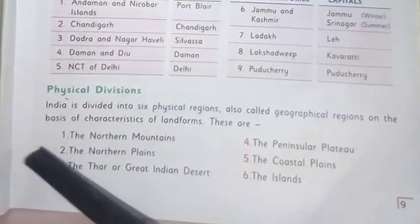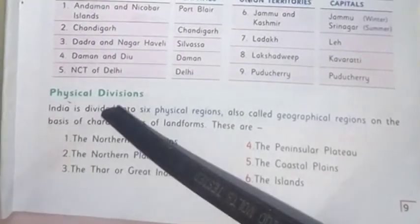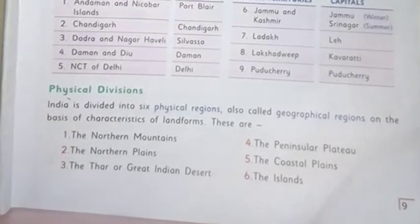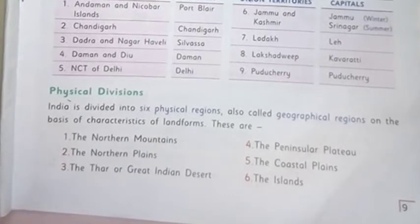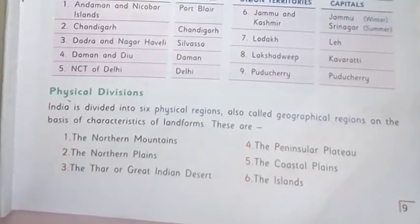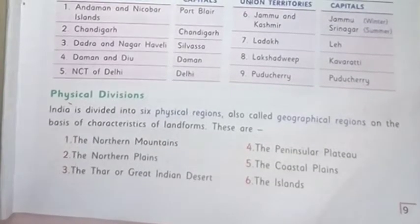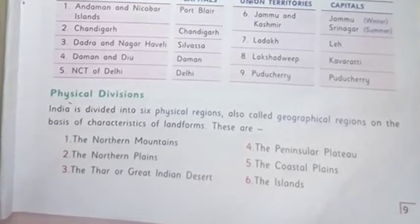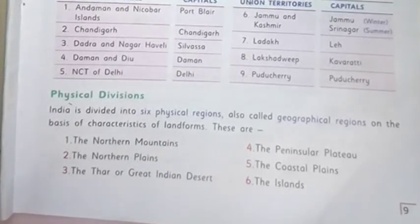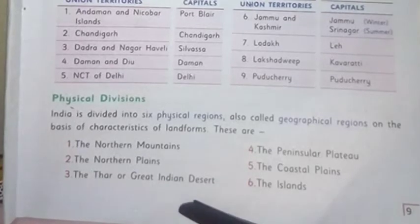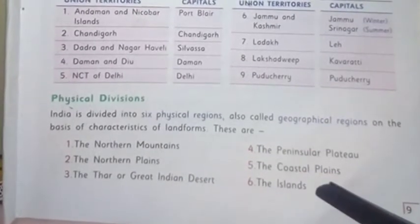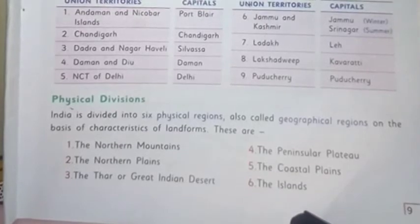Now we'll come to the physical divisions. India is divided into six physical, or geographical, regions because of their characteristics of landforms. They are: the northern mountains, the northern plains, the Thar or Great Indian Desert, the peninsular plateau, the coastal plains, and the islands.